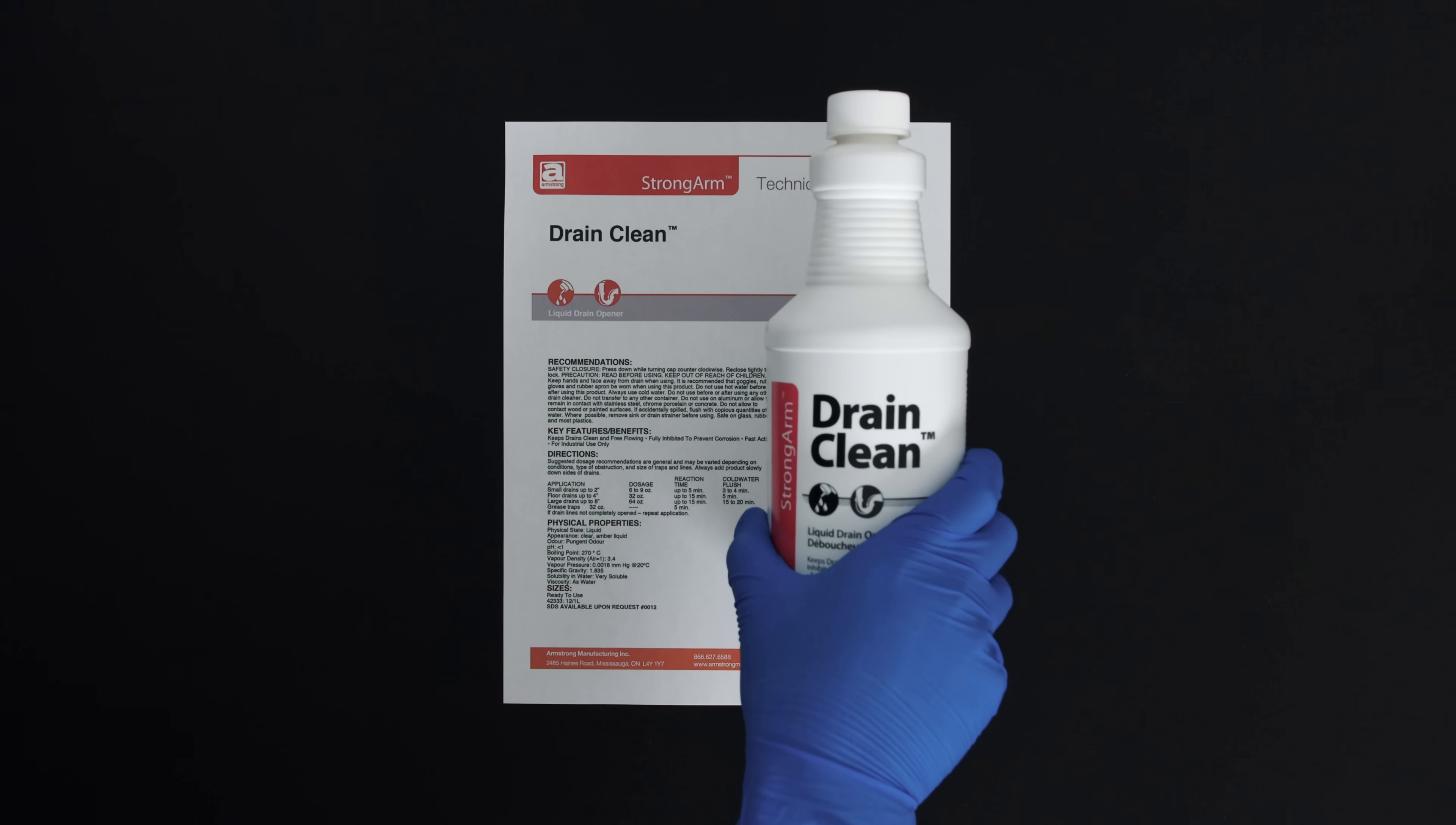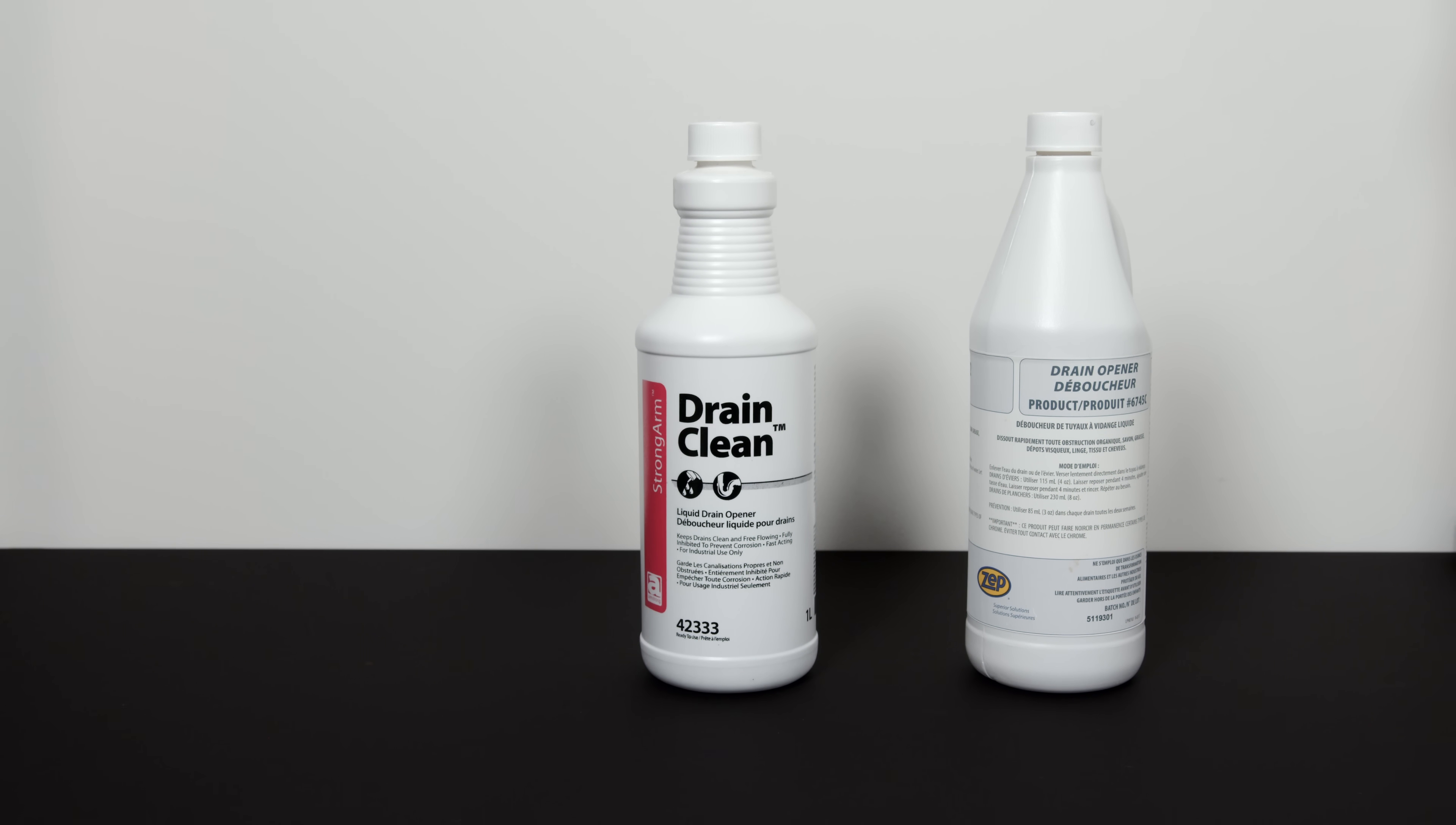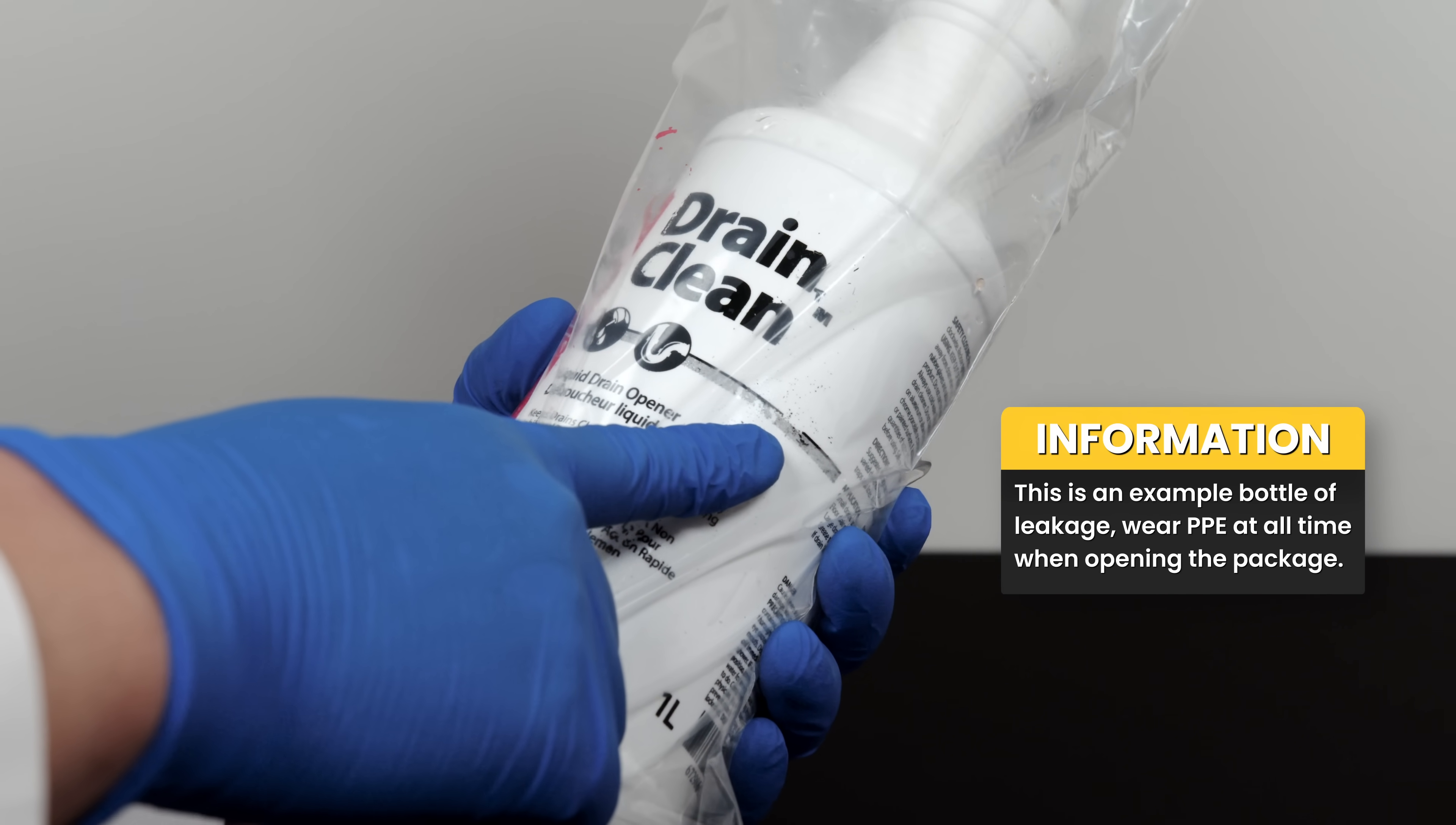It is rather tricky to identify which drain opener contains sulfuric acid. Though there are a few signs that will indicate it contains sulfuric acid. Firstly, they usually come in a 1 liter bottle in a shape like this. Trust me bro, I've tried a few brands and they all look the same. They will also come with a sealed plastic bag to prevent leakage.